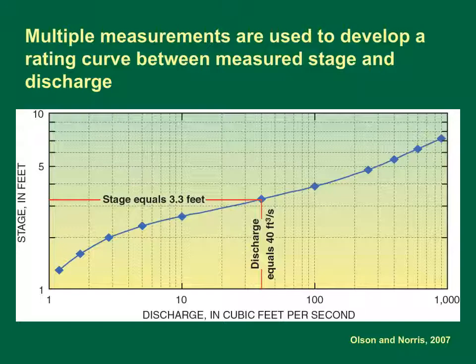Calibrating and verifying this relationship is a constant and ongoing process, as the stream channel geometry varies and changes with debris, ice, scour, and deposition. Once a rating is established, continuous measurements at the stream gauge can be used to provide online, real-time data.